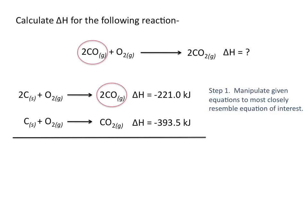So we're going to need to flip this equation around so that carbon monoxide is on the reactant side. Writing the equation flipped gives us: 2 carbon monoxide going to 2 carbon plus O2.